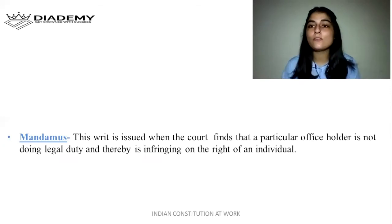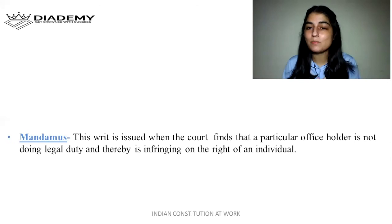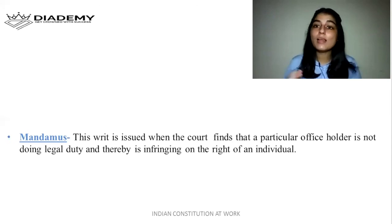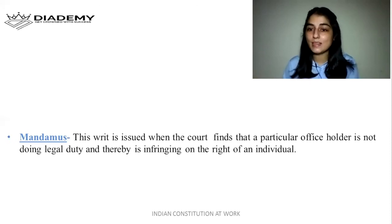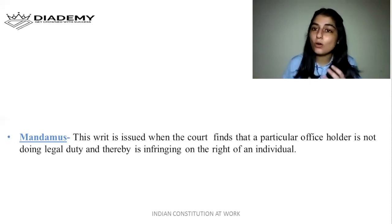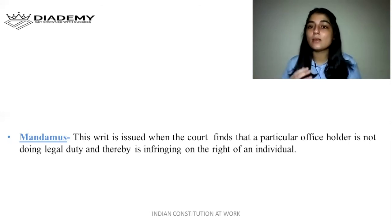Next is the writ of mandamus. Mandamus means 'we command.' For example, suppose you are going to get your license made, and the public authority responsible for making your license is not doing their work. You can approach the court and the court will command that public authority to do their work. This writ is issued when the court finds that a particular office holder is not doing their legal duty and thereby infringing the rights of the individual.